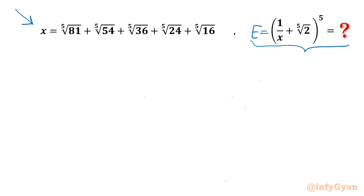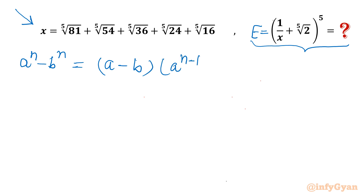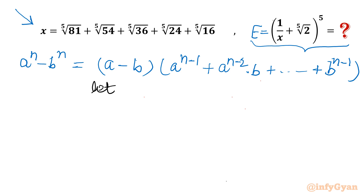Let us get started by considering one expansion formula: aⁿ - bⁿ = (a - b)(aⁿ⁻¹ + aⁿ⁻²·b + ... + bⁿ⁻¹). Now let us substitute n equal to 5.